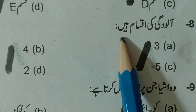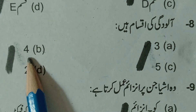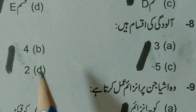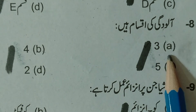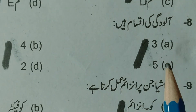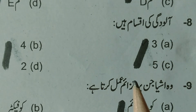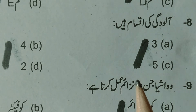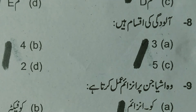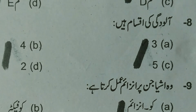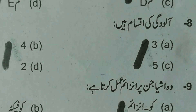MCQ 8: How many types of Ludi (pollution) are there? Options are 3, 4, 5, or 2. There are 3 major types: land pollution, physical pollution, and water pollution. So the answer is 3, option A is the right answer.